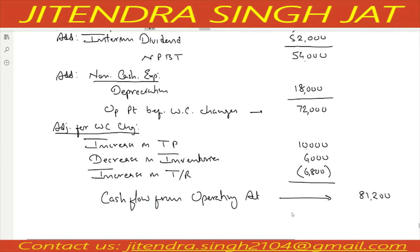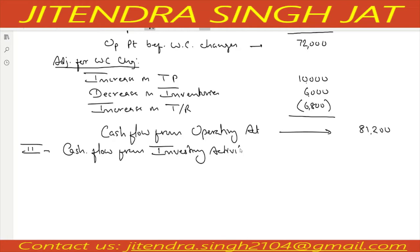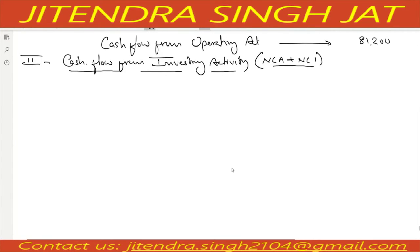Let us begin with the second activity: cash flow from investing activity. Investing activity records items related to non-current assets and non-current investments. Let us see the non-current assets in the question.